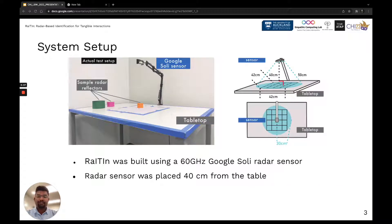We built the prototype of RaITIn using Google Soli sensor, which is a 60 GHz FMCW radar sensor. We placed the Google Soli radar sensor on top of a table surface at a distance of 40 cm. As marked in the figure, the blue space denotes the user interaction space.